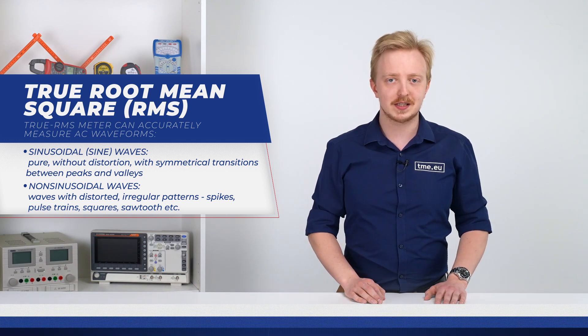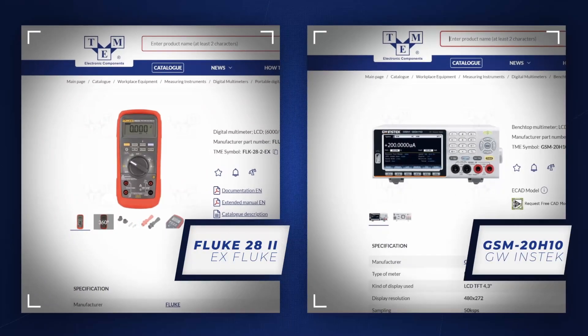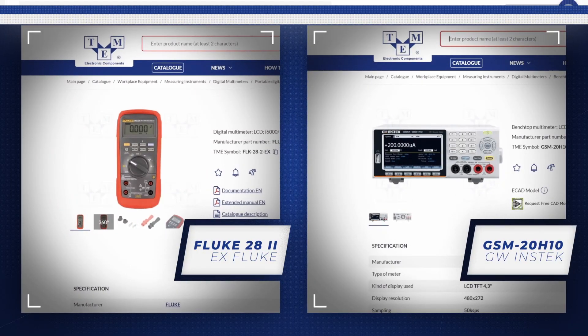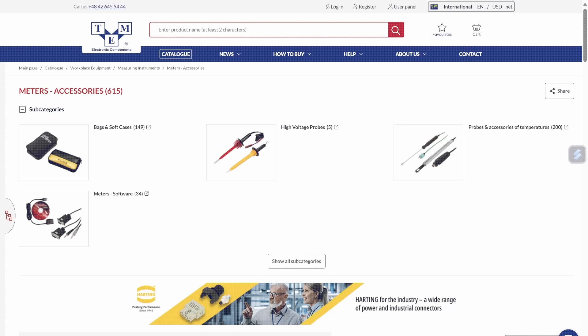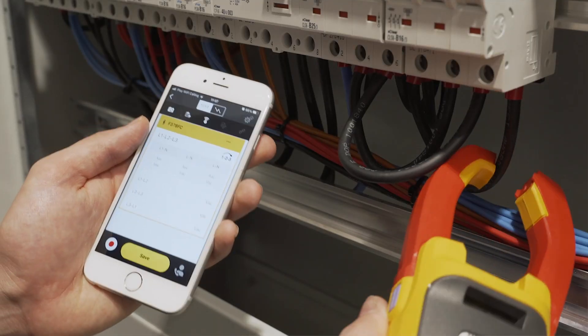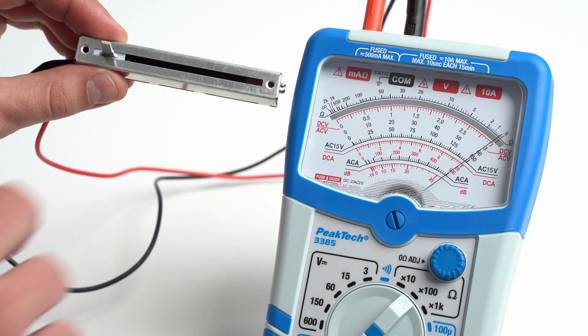Digital multimeters come as portable and benchtop versions. On our website there are also available all the accessories like probes, leads, as well as sets with all of them included. If you know you might need it, there are available clamp meters, or if you like retro style, analog multimeters.